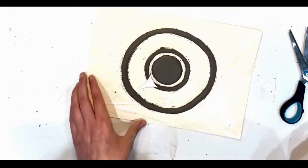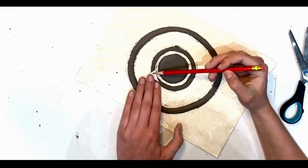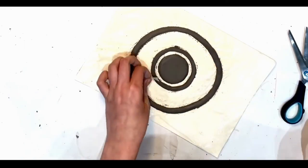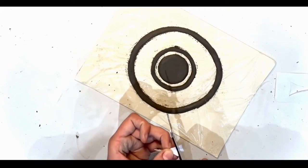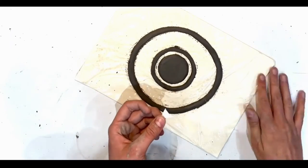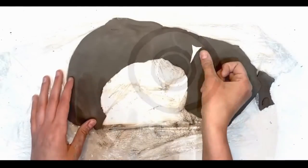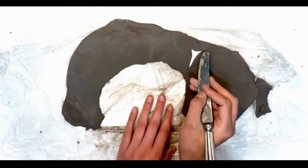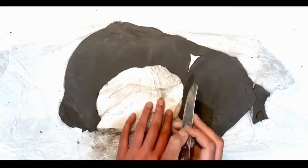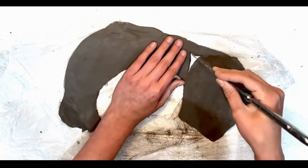If it doesn't, you can trim it down. Now use your stencil and cut out some of these shapes. The amount you will need depends on how big your circles are.